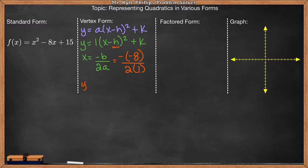So right now, if I rewrote it, I have 1(x minus 4) squared plus k. Now, in order to find the value of k, I'm going to take this number 4 that I got from here and I'm going to plug it into this equation. So here, that would give us 4 squared minus 8 times 4 plus 15.